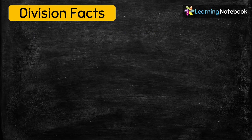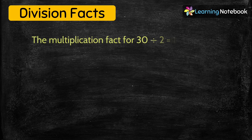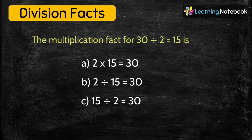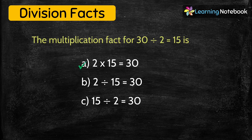Can you tell me the multiplication fact for 30 ÷ 2 = 15 from the given options — A, B, or C? Yes, it is A: 2 multiplied by 15 equals 30.